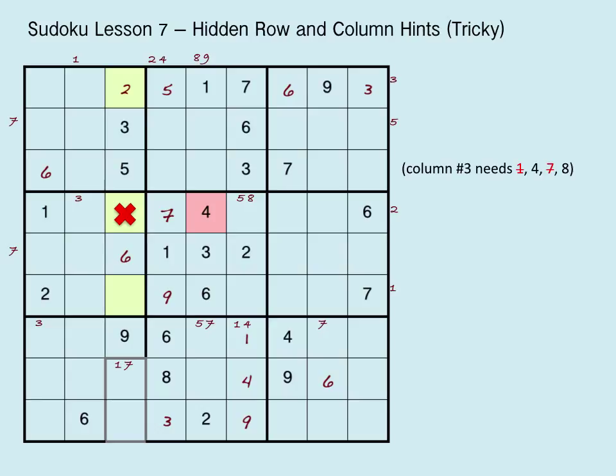And now that we only have two cells left in that box, this four here is going to prevent it from going into the cell on the same row. It has to go on the lower green cell. And the remaining cell will therefore be an eight.